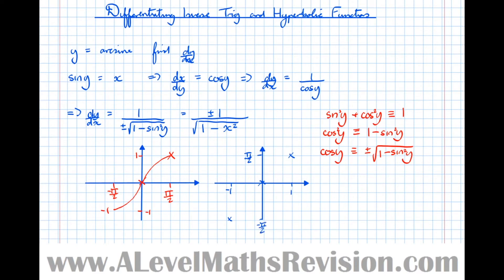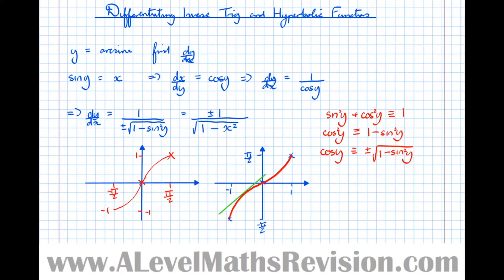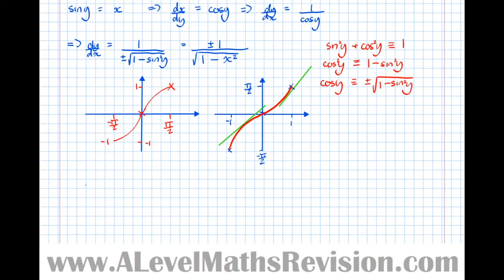There are two possible shapes the reflected curve could take. The green one is the same shape as the original, so that's not the one we want. The correct arcsin graph shows that no matter where we draw a tangent, it always gives a positive gradient. Therefore, dy by dx equals +1 over √(1 − x²).